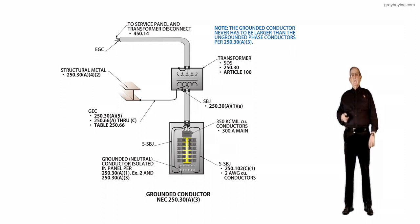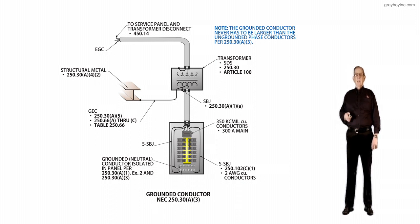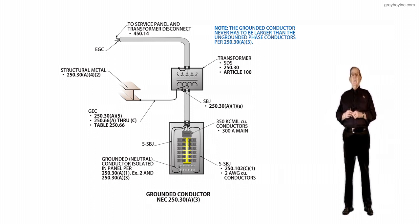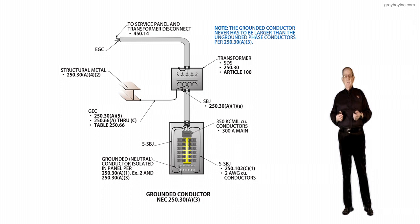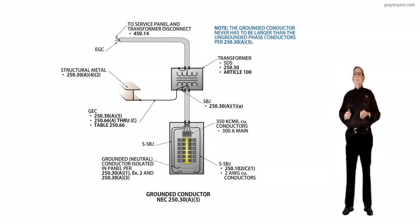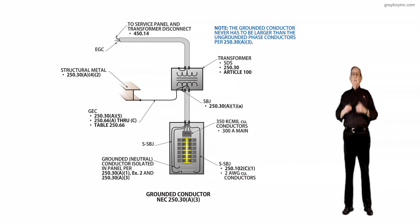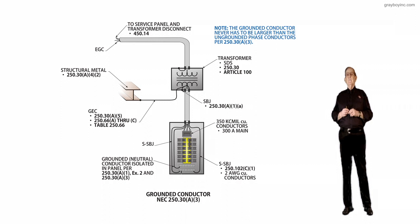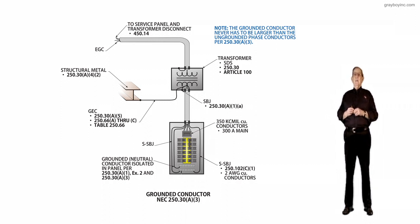Notice we also have in the illustration the supply-side bonding jumper. And then we have the grounded conductor isolated in panel as outlined in 250.30A1 exception 2 and 250.30A3. Notice all the rules for grounding, bonding, and installing a separately derived system, all the rules now are in 250.30, so that the designer installer only has to refer to 250.30 to get all the rules.